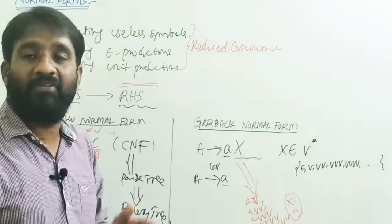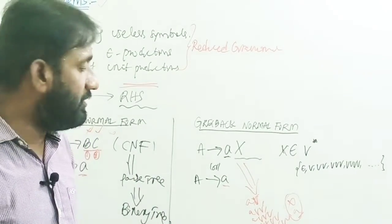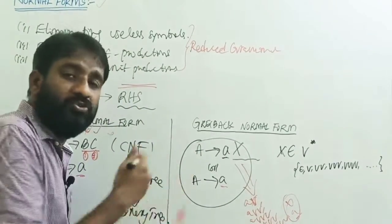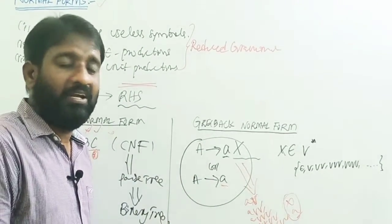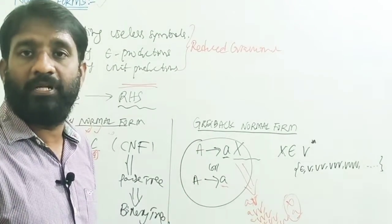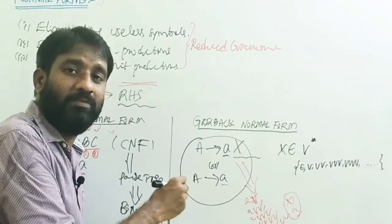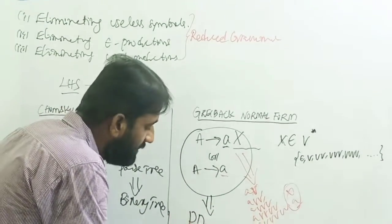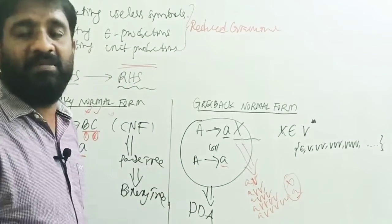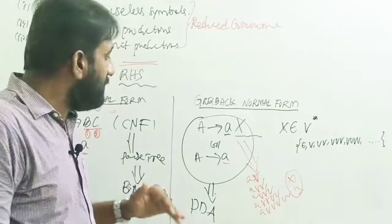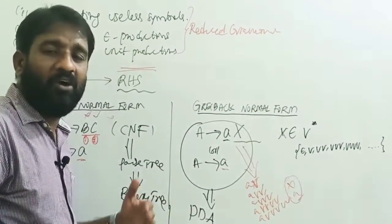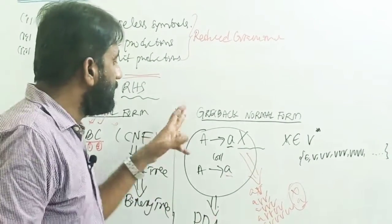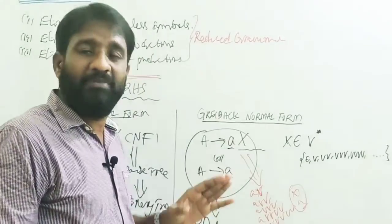The advantage of converting a grammar into Greibach Normal Form is that, as we know from the Chomsky hierarchy, context-free grammars are accepted by pushdown automata. If any context-free grammar is converted into GNF, then we can design a PDA for that grammar in a very easy and effective manner. In further lectures, we will discuss how to convert a CFG into CNF and GNF.